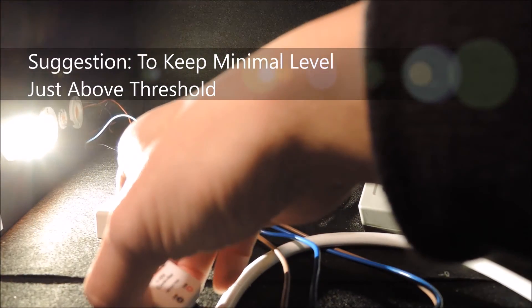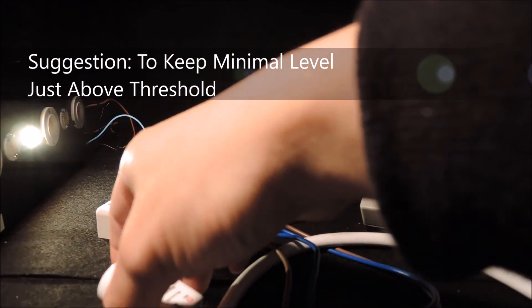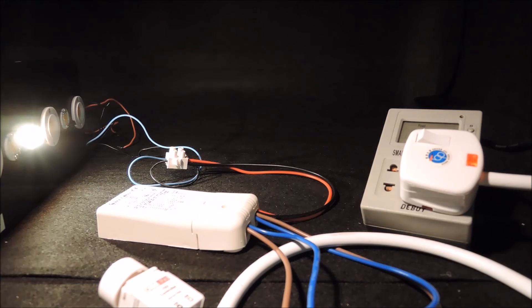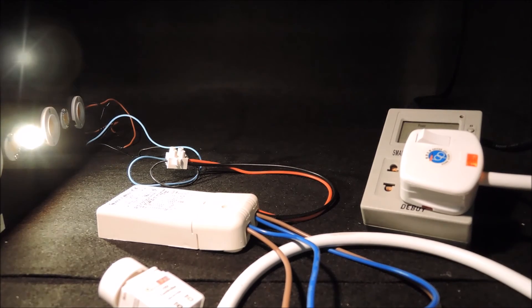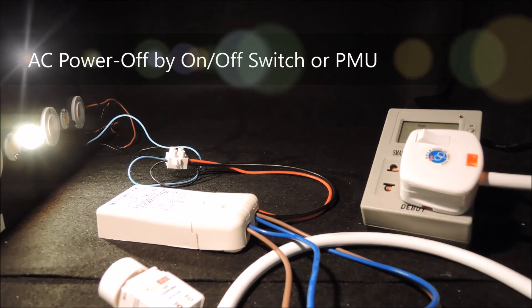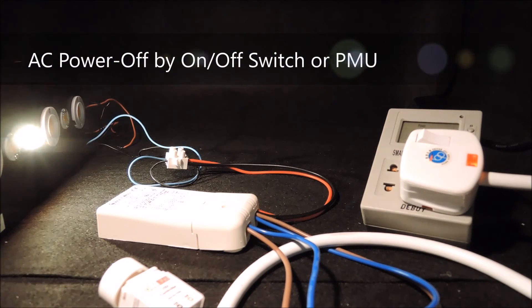Thus, in our opinion, while we can achieve the effect of switching off the visible light, it's better to keep the lowest level a bit higher just to remind that the light is not properly switched off, and thus the AC power to the driver should be cut either with an on-off switch or by a power management unit PMU.